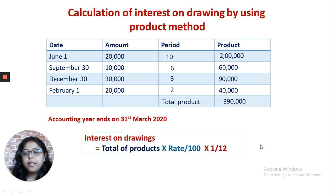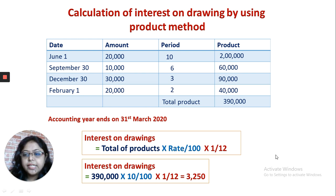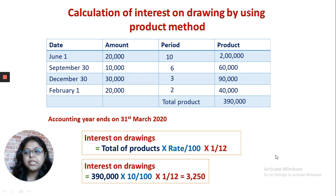Now put the total product into the formula: 3,90,000 × 10% × 1/12. This gives the amount of interest on drawings. This is the product method. You need to understand what kind of information is given and apply the appropriate method. Sometimes the question will also mention which method you have to use.